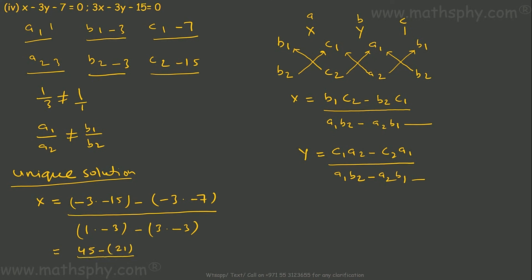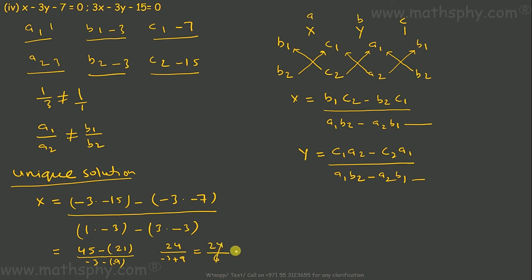The denominator is A1·B2 − A2·B1: 1 × (−3) − 3 × (−3) = −3 − (−9) = −3 + 9 = 6. So x = 24 over 6 = 4. X is 4.